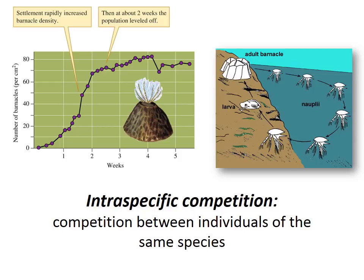This reduction in growth was the result of what we call intraspecific competition, because it is competition occurring between individuals of the same species. This type of competition can cause density-dependent reductions in population size, such as those we explored in the last lecture.